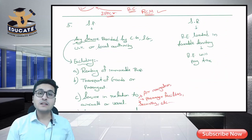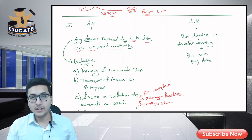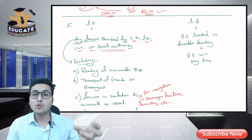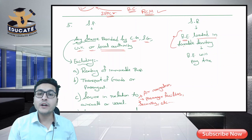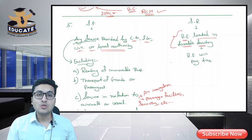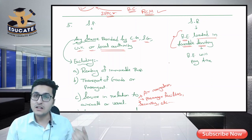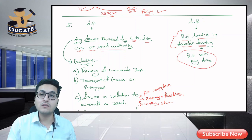Next is service provided by Central Government, State Government, Union Territory, and Local Authority. If any of these provide services to a business entity located in taxable territory, then tax will be paid under reverse charge by the service receiver, which is the business entity.